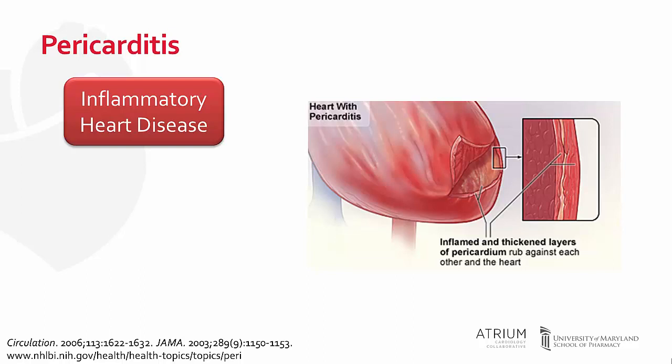As you can see in the picture on the right, pericarditis is defined as inflammation and thickening of the two layers of the pericardium. The layers rub up against each other and myocardial tissue, producing a pericardial friction rub that we will discuss later in this video.